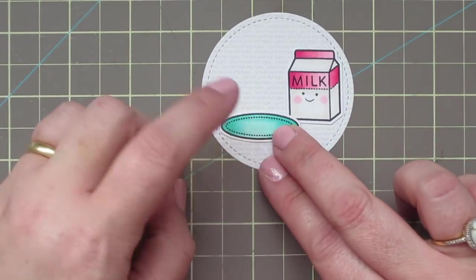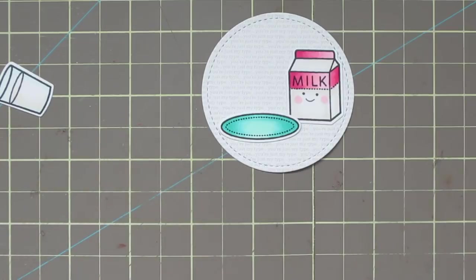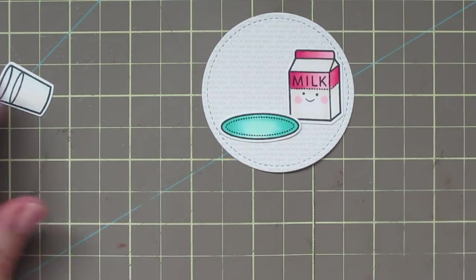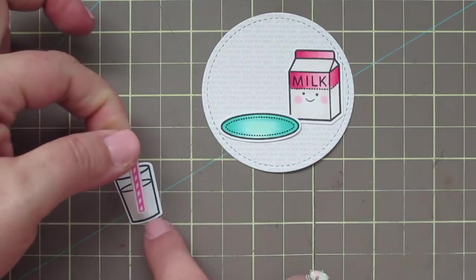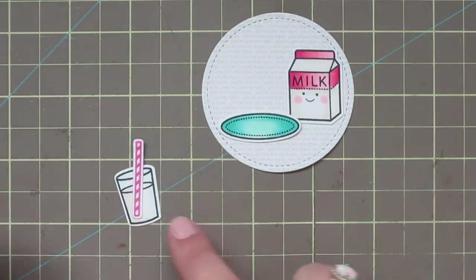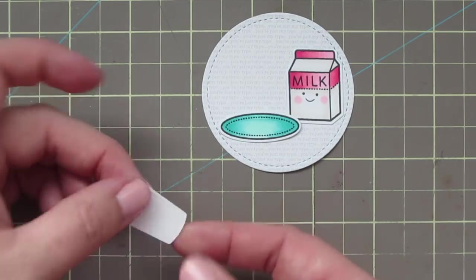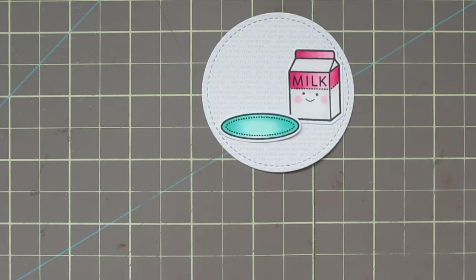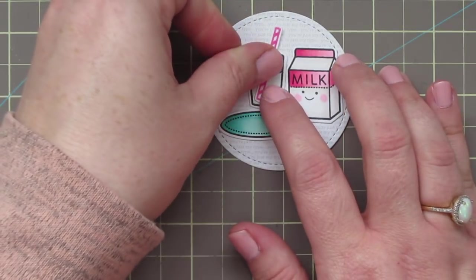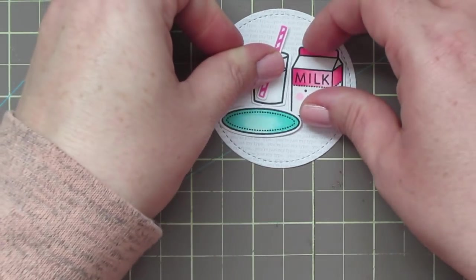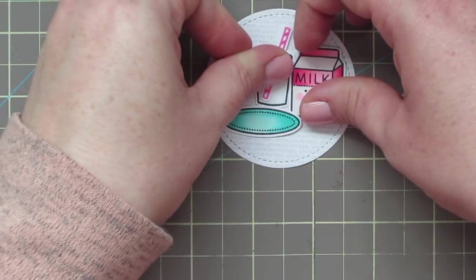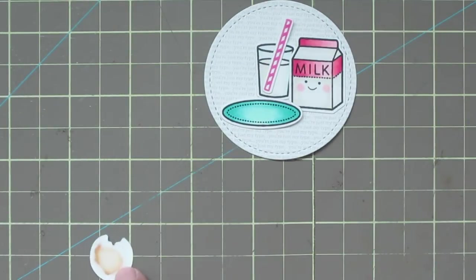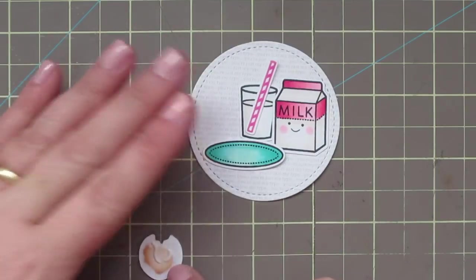So I've trimmed out a focal panel using the Lawn Fawn Stitched Circle Stackables out of some pattern paper that has a bit of a text print onto it. And now I'm just adding all of my little embellishments with some liquid glue. I like to use the liquid glue because it gives you a little wiggle room to be able to move things around and adjust until you're ready for them to be firmly pressed into place. It just takes a few seconds for that glue to become permanent, so you have a little bit of time.